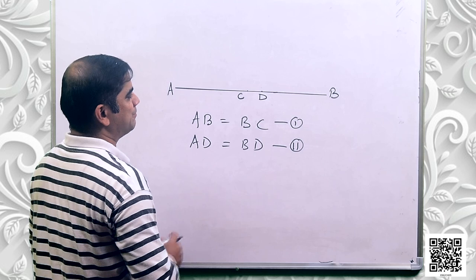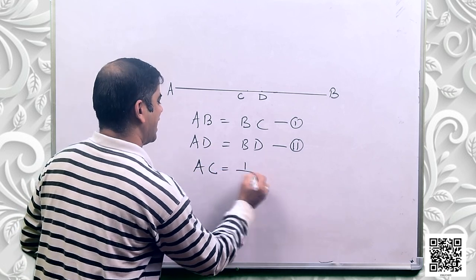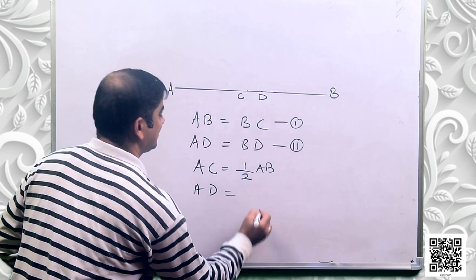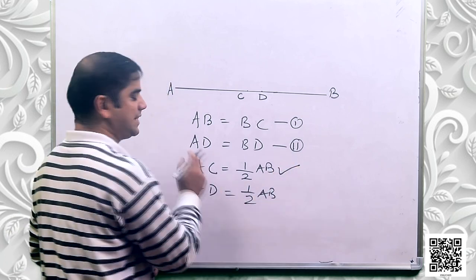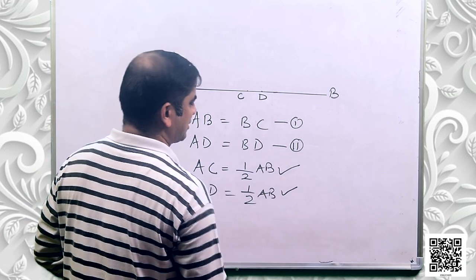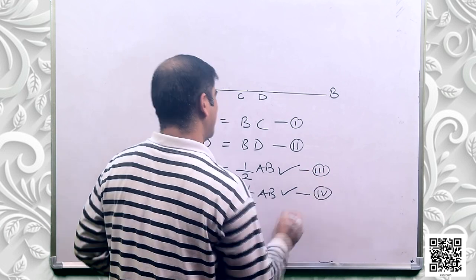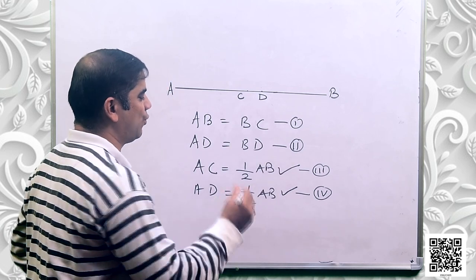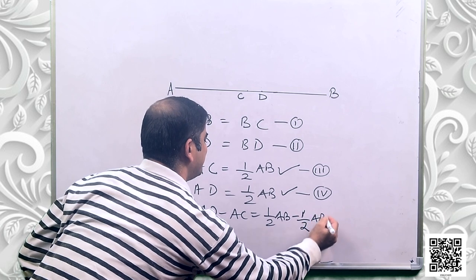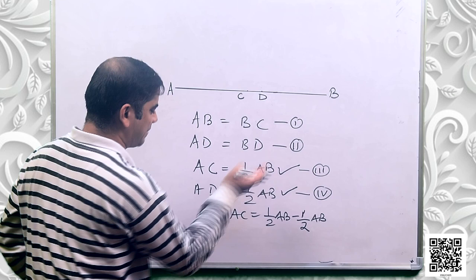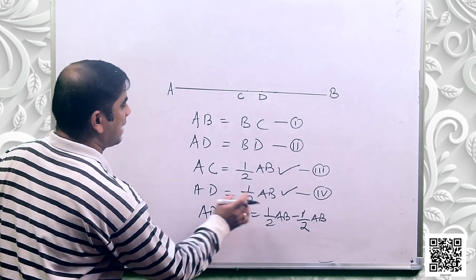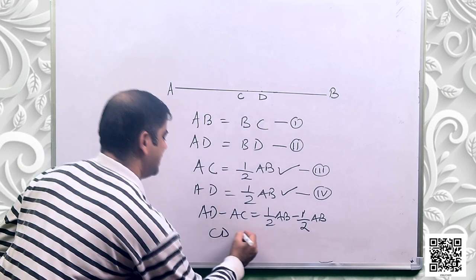If I take AC, that means it is half AB — call this equation 3. Again, if I take AD, that is also equal to half AB — call this equation 4, because C is the midpoint in one case and D is the midpoint in the other. When I combine these two equations, subtracting equation 3 from equation 4, I get AD minus AC is equal to half AB minus half AB. So AD minus AC equals CD equals 0.